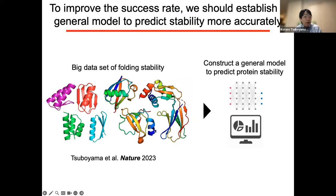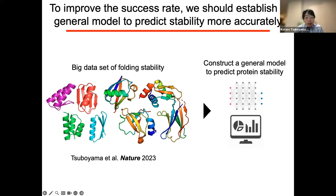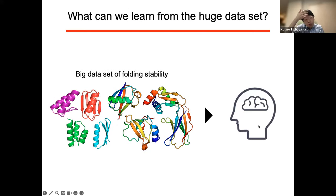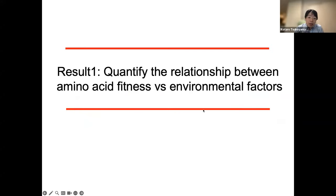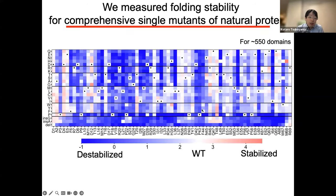We developed a new method to quantify the folding stability of proteins very accurately and in a very high-throughput manner. The next step is to construct a general model for predicting folding stability using this huge dataset. We are developing such a general model. In this talk, I'd like to focus on what we can learn from the huge dataset. First, I'd like to talk about the relationship between amino acid fitness and environmental factors. We quantified the folding stability for comprehensive single mutants for around 550 natural and designed proteins using the cDNA display proteolysis method.